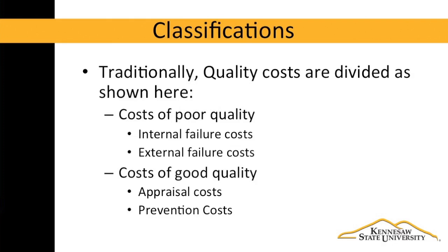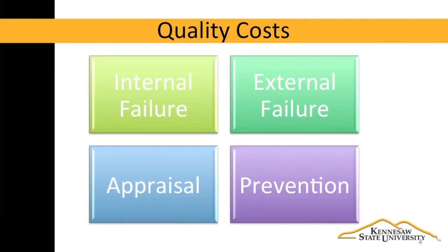There is a traditional and useful grouping for quality costs. The costs of poor quality appear in the cost from failures. The costs of good quality are the costs associated with catching or preventing defects. Let's explore these classifications a little deeper and look at them one at a time.